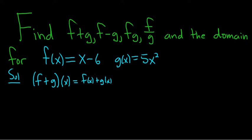And then x minus 6, that's going to be your f(x). So x minus 6, and then g(x) is simply 5x squared. Then you can rewrite this if you like. You can write the term of highest degree first. So 5x squared plus x minus 6. So that would be the correct answer for f plus g.